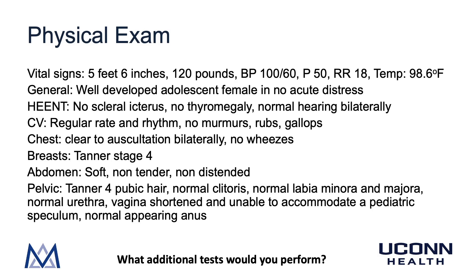The following is a physical exam that was performed on our patient TM. Vital signs: she is 5 feet 6 inches tall and 120 pounds, blood pressure 100 over 60, pulse 50, respiratory rate 18, and temperature 98.6°F. On general appearance, she is a well-developed adolescent female in no acute distress. Her HEENT exam includes no scleral icterus, no thyromegaly, and normal hearing bilaterally. Cardiovascular exam shows regular rate and rhythm with no murmurs, rubs, or gallops. Lungs are clear to auscultation bilaterally. Her breast exam is Tanner stage 4. Abdomen is soft, non-tender, and non-distended. On pelvic exam, she has Tanner stage 4 pubic hair, a normal clitoris, normal labia minora and majora, a normal urethra. However, her vagina is shortened and unable to accommodate a pediatric speculum. She has a normal appearing anus.